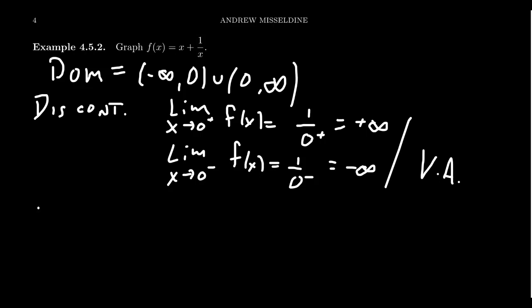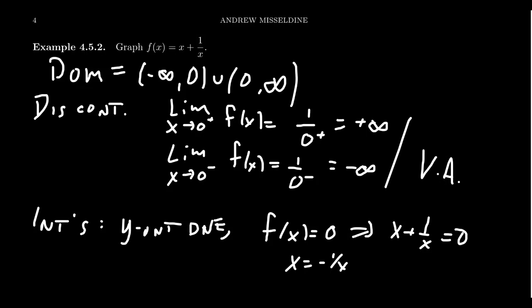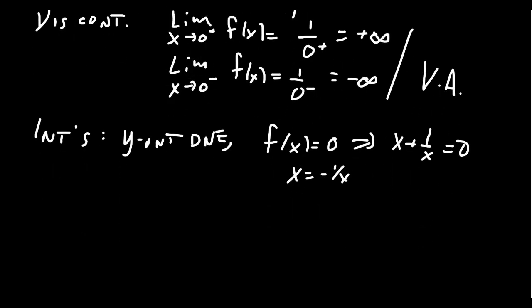In terms of intercepts, well, because x equals 0 is outside the domain of the function, turns out there is no y-intercept. The y-intercept does not exist. In terms of x-intercepts, well, if we looked at the equation f of x equals 0, this would imply we look at x plus 1 over x equals 0. This gives us that x equals negative 1 over x. Times both sides by x, you get that x squared equals negative 1. I'm going to stop you right there. x squared can't equal negatives. It has to be non-negative. So this tells us that x-intercepts also do not exist.